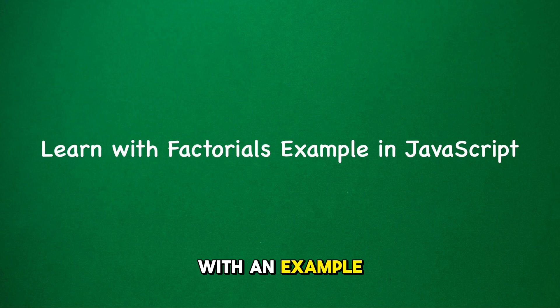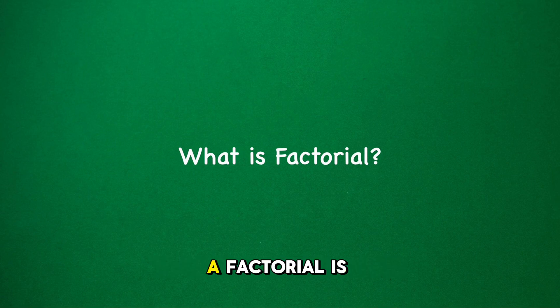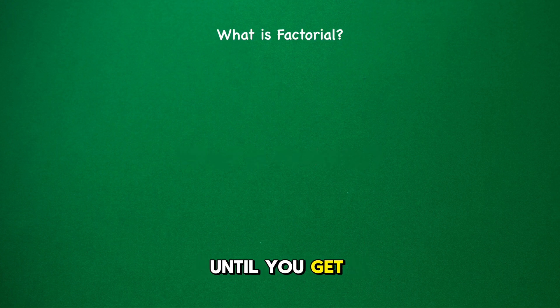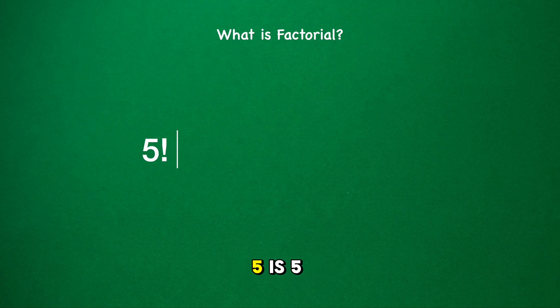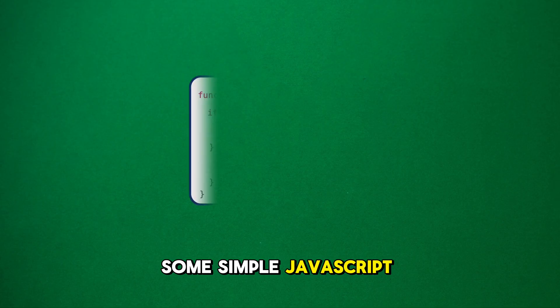Moving on to the second part of our journey with recursion, let's see how it works with an example. We'll use something called factorials in JavaScript. To understand recursion better, a factorial is a math thing where you take a number and multiply it by all the numbers below it until you get to 1.